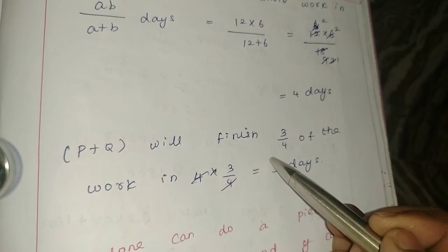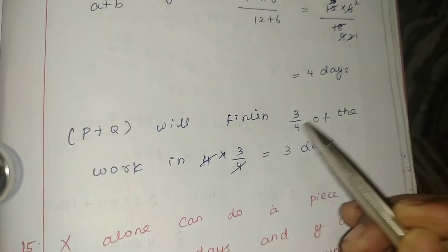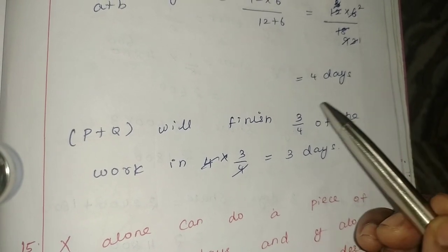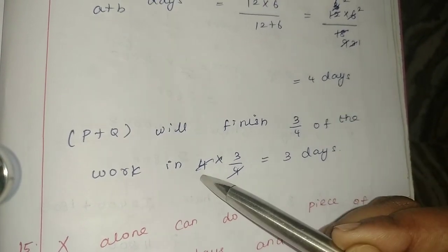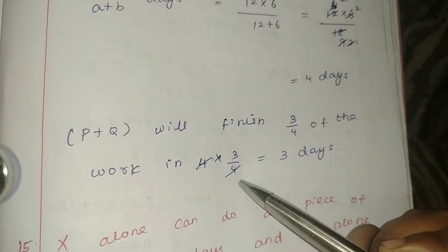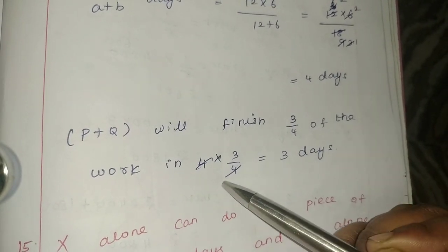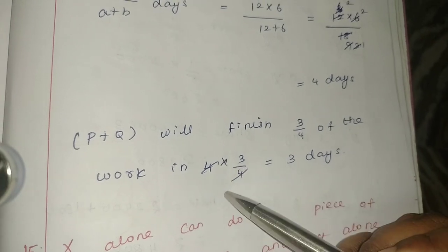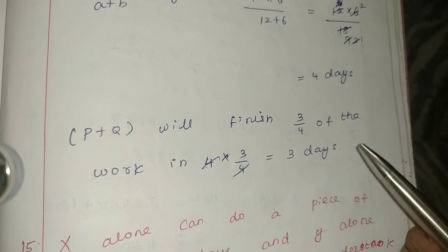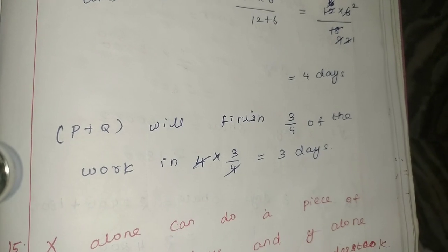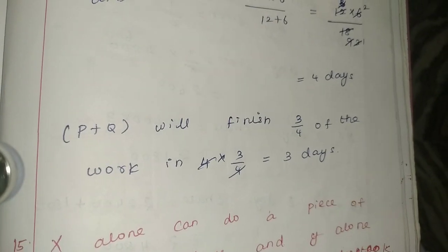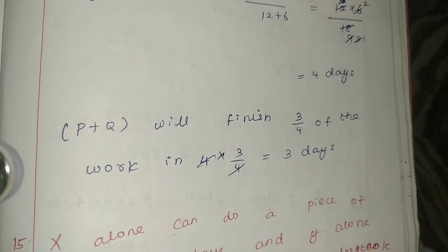P and Q together complete the full work in 4 days. Now for 3/4 of the work: 4 into 3/4, the 4 cancels, so 3/4 of the work is completed in 3 days. Clear.